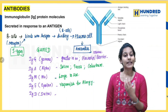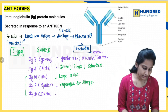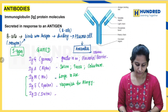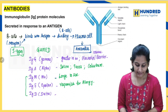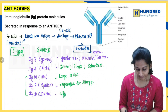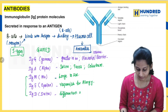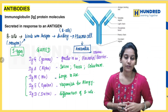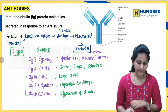Next, IgD — delta. Both delta and mu are large in size. IgD helps in the differentiation of B cells. So that covers the different types of antibodies and their functions. Next we will look at the basic structure of an antibody.